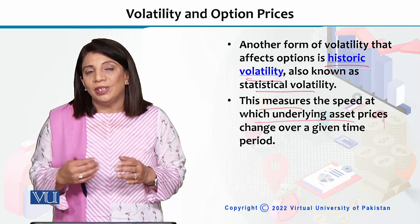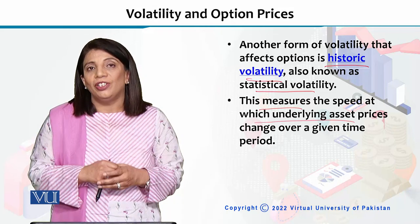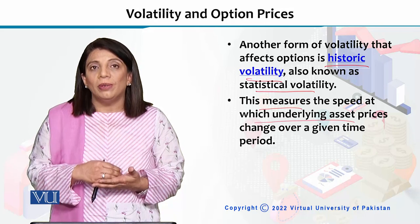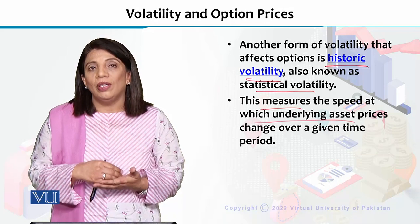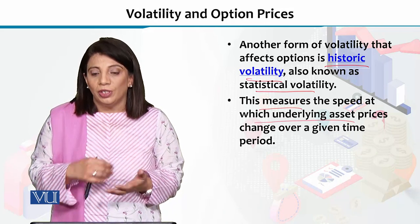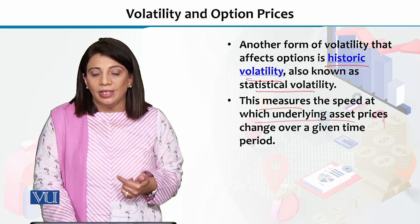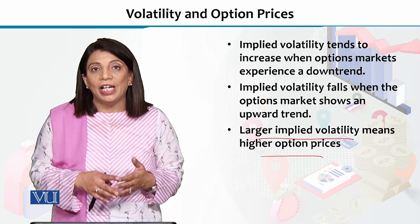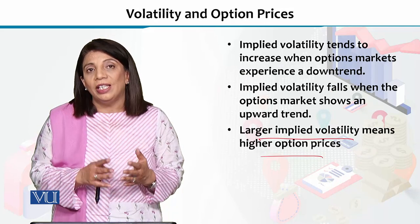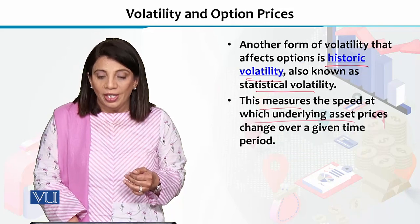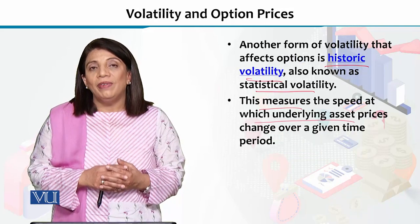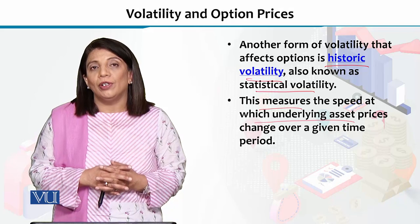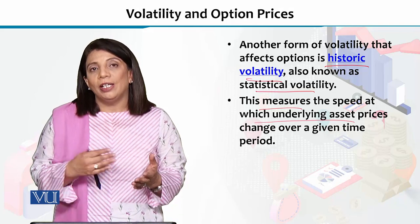Us ke liye hum statistics ke tools laga ke us particular cheez ko measure karte hain, lehaza it is also termed as or called the statistical volatility. So, statistical volatility is the second type. Is ke ilawa hamare paas implied volatility hai — these are the two types of volatilities which we assess when we have to understand the dynamics of the call and the put option.